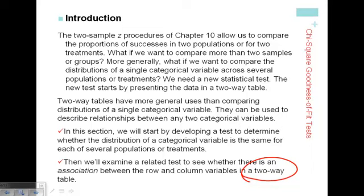We've done two-way tables before. We use them to organize multiple categorical variables — values that a single categorical variable takes running across the top, and values that another categorical variable takes along the other side. At the intersection, we put counts: the number of things that meet both of those criteria.